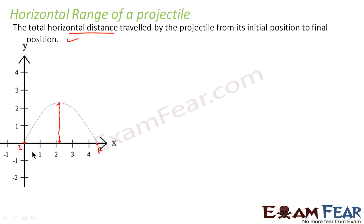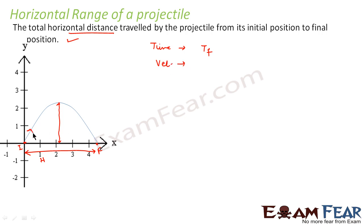This is the final point, so this distance is the horizontal range. The time to cover this horizontal range will be equal to the time of flight — the total time the body travels from initial to final position. The velocity along the horizontal direction: if the initial speed is u and the angle is θ, the horizontal velocity would be u·cosθ.